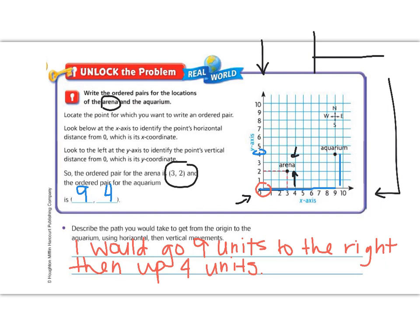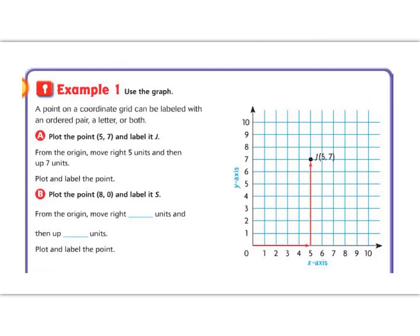Great job so far. Let's continue on with example one and two in the rest of our lesson. Example one says use the graph. A point on a coordinate grid can be labeled with both an ordered pair, a number, or both. This helps us know what point we are talking about. For example, it says A, plot the point, five, seven, and it's labeled with J. So if we go five down the runway and then straight up seven, we get to this point, five, seven, and you can see we labeled it J.